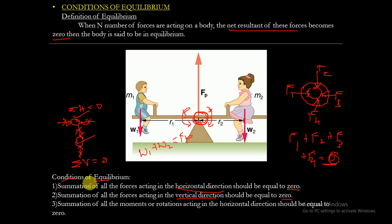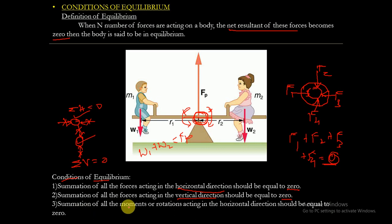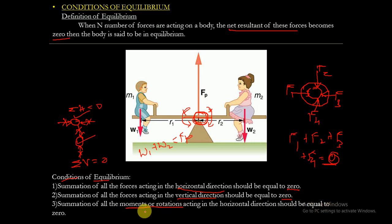So summation of horizontal forces equals zero, summation of vertical forces equals zero, and the third condition of equilibrium is that the summation of all moments and rotations must also be equal to zero.